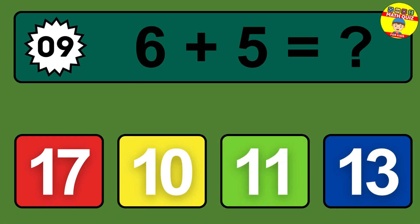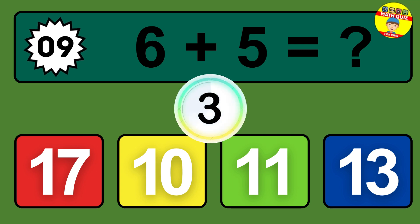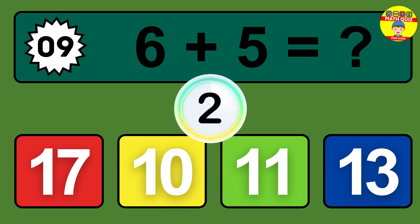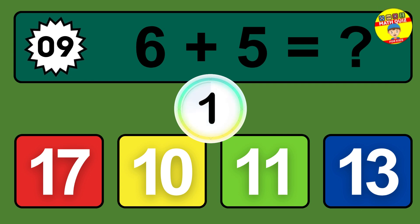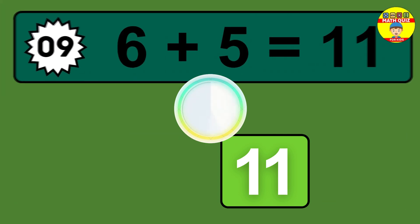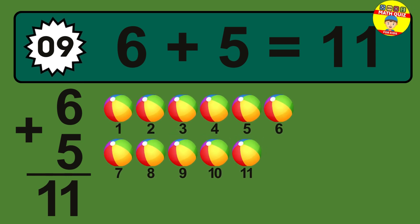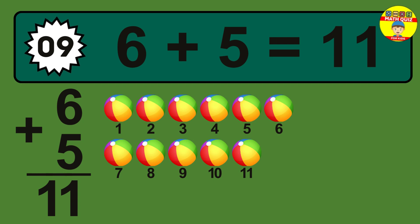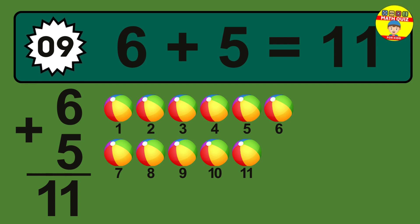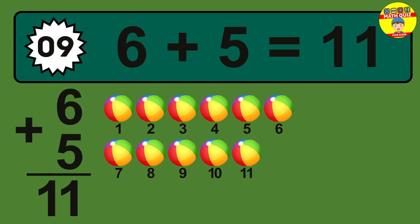Question 9. 6 plus 5 equals what? The answer is 6 plus 5 is 11. Let's count it: 1, 2, 3, 4, 5, 6, 7, 8, 9, 10, 11.